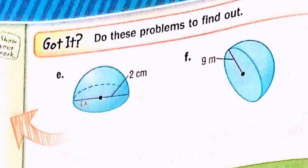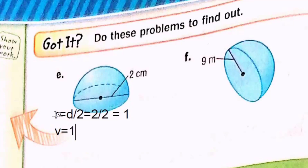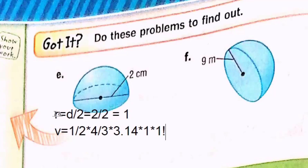Do this problem. E: I have a diameter of 2 centimeters. Can I find the radius? Yes. Radius = diameter ÷ 2 = 2 ÷ 2 = 1. So radius equals 1. Now write the volume of a hemisphere: volume = 1 over 2 × 4 over 3 × pi (3.14) × r³. The value of r is 1, so 1 × 1 × 1. The answer is approximately 2.1 cubic centimeters, or cm³.